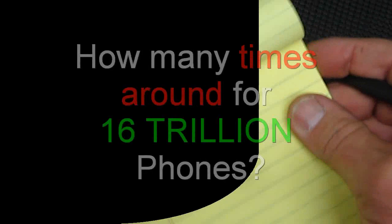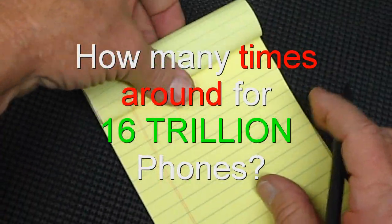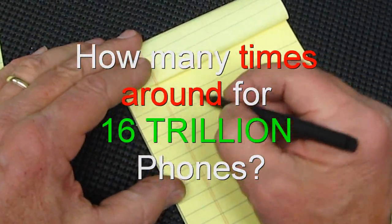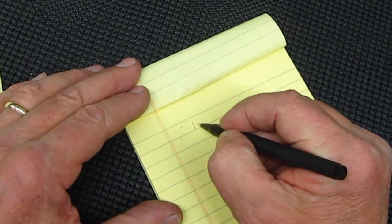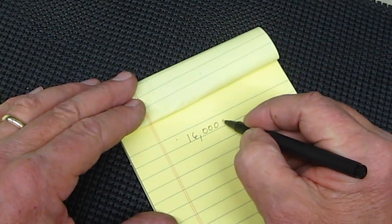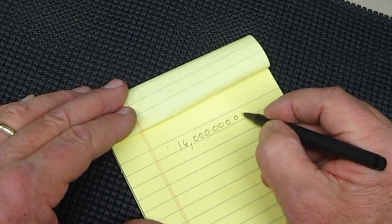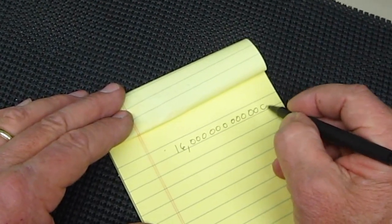Okay, well let's see if we can figure this out. 16 trillion, that is 12 zeros. So 16, one, two, three, four, five, six, seven, eight, nine, ten, eleven, twelve.